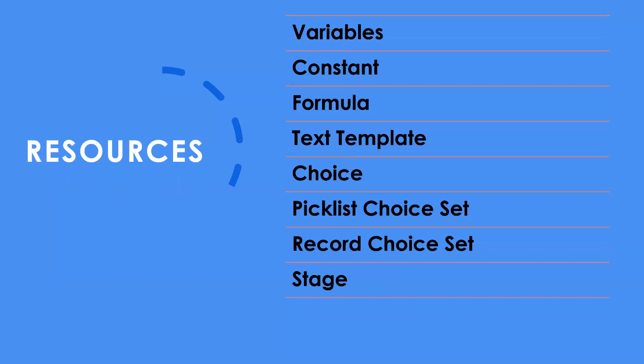These are the resources you can create in Flow Builder. You can create variables, formulas, constants, pick list values, choice sets, or record choice sets. These resources are available within the Flow Builder interface to support your flow logic.